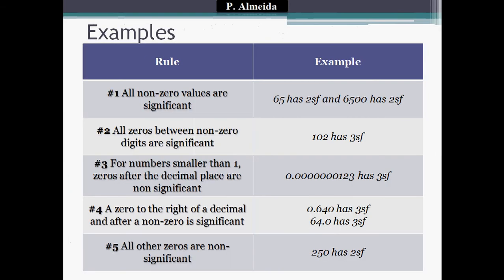Let's look at examples. Rule number one — all non-zero values are significant: 65 has two significant figures, just like 6,500 has two significant figures. The reason is that six and five are significant figures, but the zeros are not. Rule number two — all zeros between non-zero digits are significant: 102 has three significant figures because one and two are significant, and zero is significant because it's between non-zero values.